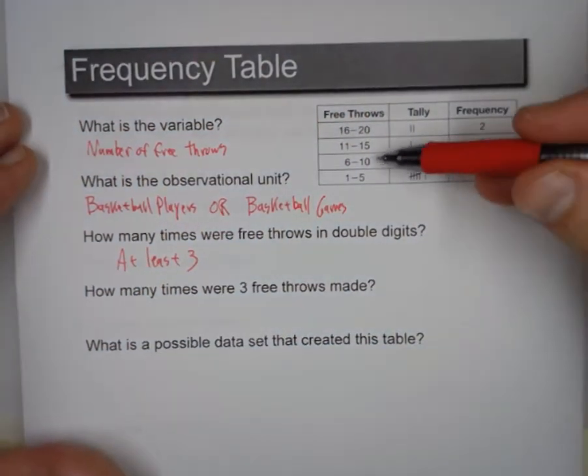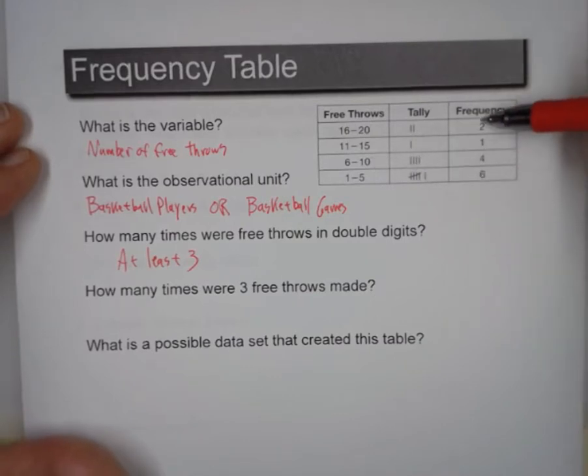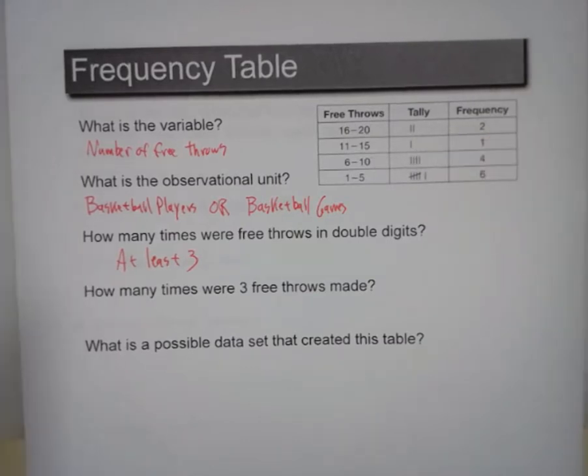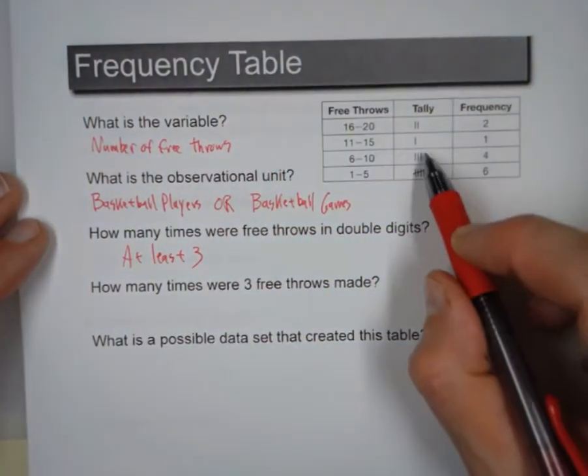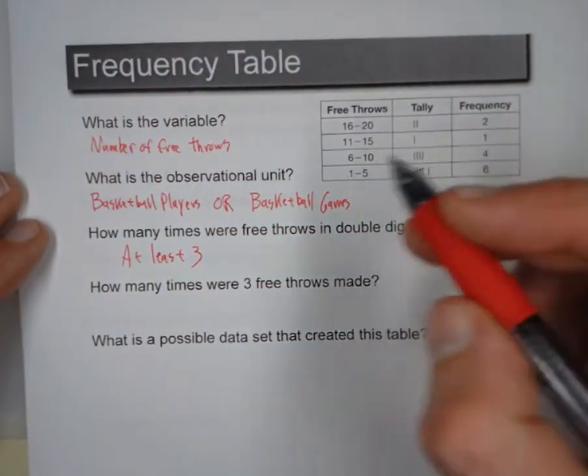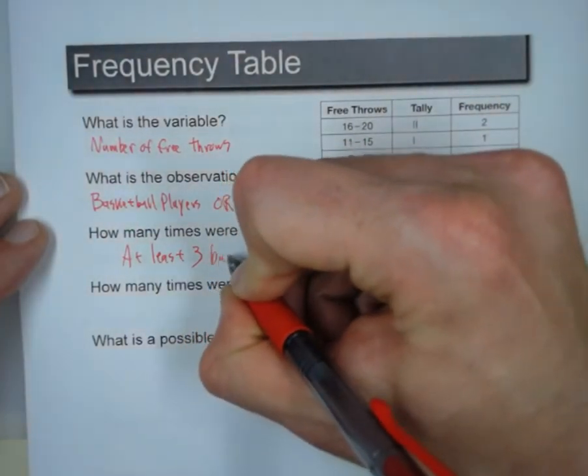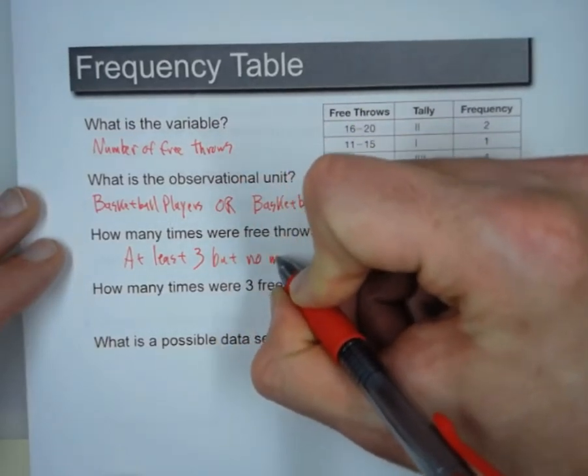If there's no 10s in here, in this group counted, then all we have are these 3. But if there are, then it's going to be more. Now, the other thing we can say is, what if they were all 10s? Then there would be 7. So we'd say at least 3, but no more than 7.